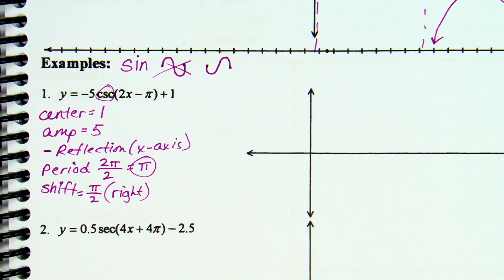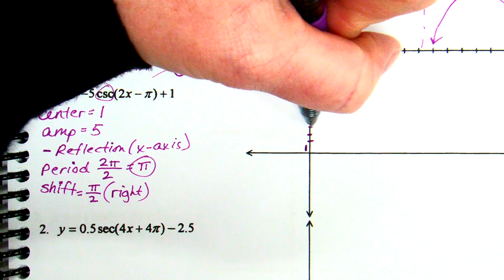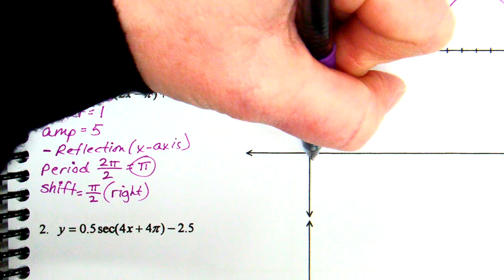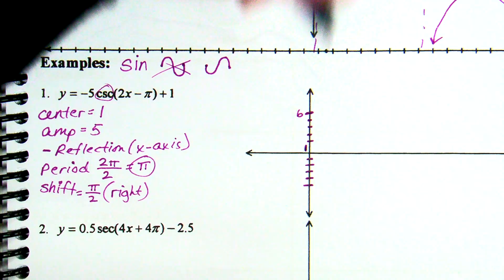Start labeling. Center line of 1. Amplitude of five — that means up five and down five. Do I want to go all the way up five and down five? I'd encourage you to keep it a little closer so we have room to put our parabolas in. Up five from one is six. Down five from one is negative four.